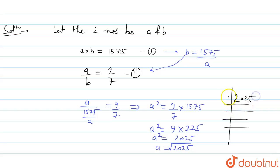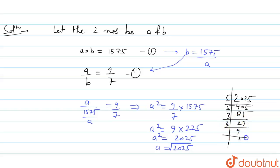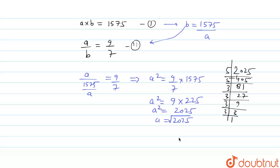2025 cannot be divided by 2. Since the unit digit is 5, we divide by 5 to get 405, then again by 5 to get 81. Then dividing by 3 we get 27, then by 3 we get 9, then by 3 we get 3, and finally by 3 we get 1.